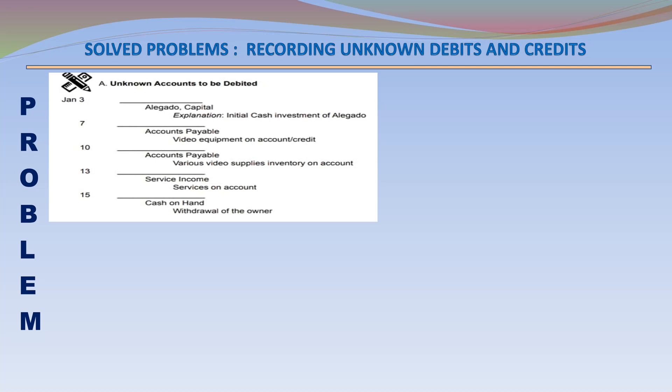January 10 – Accounts Payable Credit – Various video supplies inventory purchased on account. January 13 – Service Income Credit – Services rendered on account. January 15 – Cash on hand.